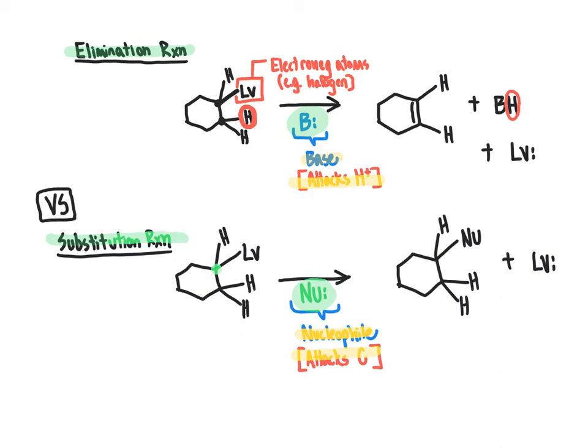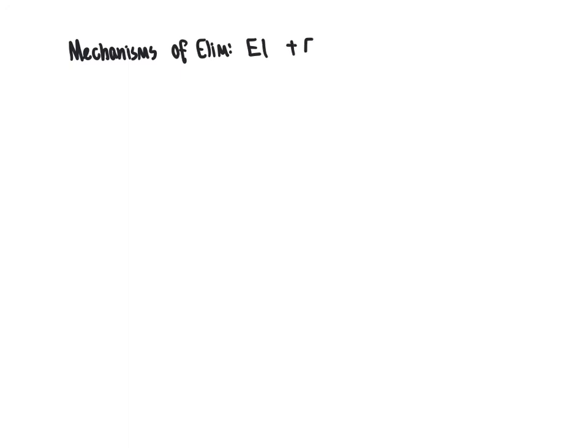Those two reactions do compete with one another, and we'll save the discussion of what features favor elimination over substitution until after we know the mechanisms of elimination. But right now we're going to focus on elimination reactions. Elimination reactions come in two different mechanisms: the E1 and E2 reaction mechanisms. Much like nucleophilic substitution reactions had two mechanisms — SN1 and SN2 — E1 and E2 are the two mechanisms of elimination.